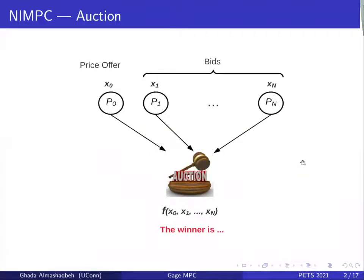Gage MPC is about combining two paradigms: namely, non-interactive multiparty computation and MPC over a blockchain. I will introduce both of these paradigms, starting with NIMPC and using auctions as an example.